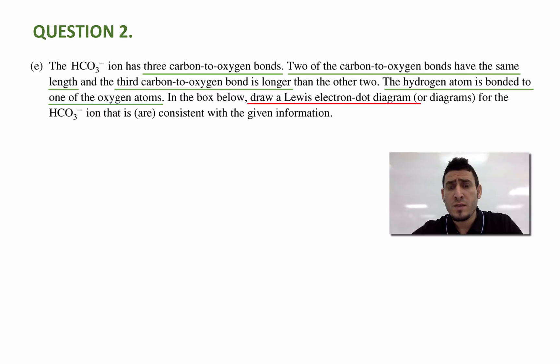In the box below, draw a Lewis electron dot diagram or diagrams, because we might have more than one, for the hydrogen carbonate ion that is or are consistent with the given information.